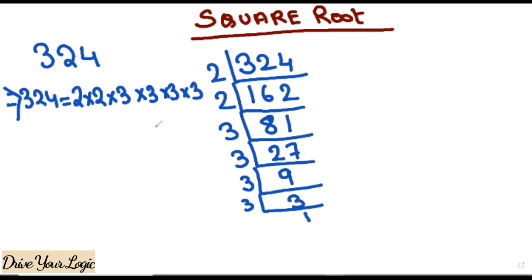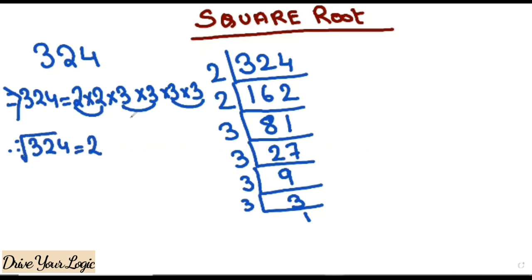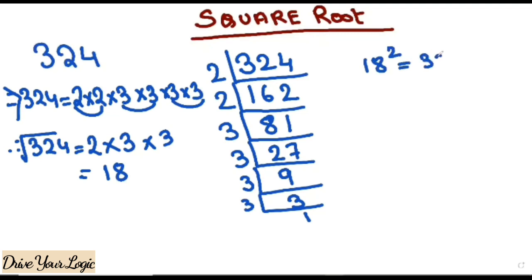Now you need to find pairs. Here is one pair, here is one pair, here is one pair. So from each pair, take one number. From the pair of 2s take one 2, from the pair of 3s take one 3, from the next pair of 3s take one 3 — and the answer is 2 × 3 × 3 = 18. That means 18 squared is 324. You can verify this using the squaring method.